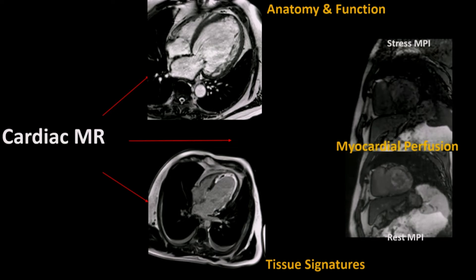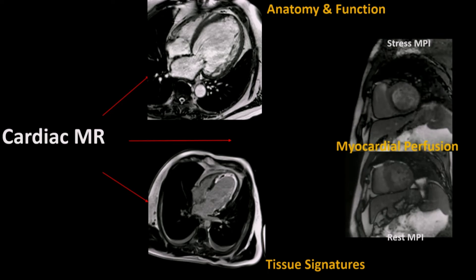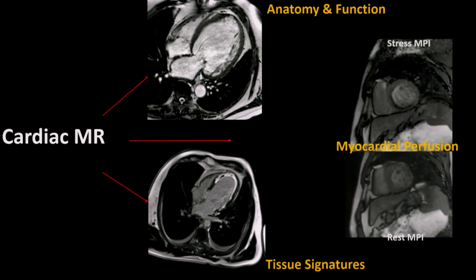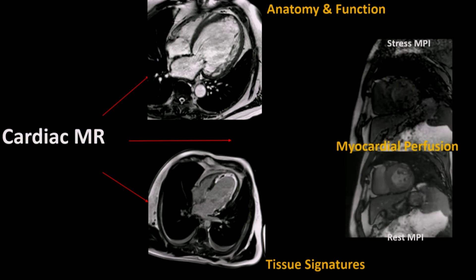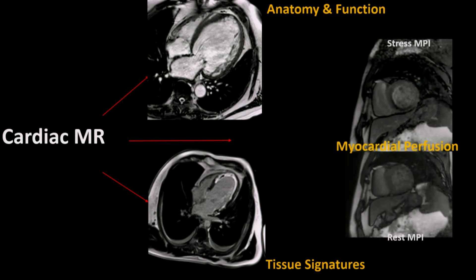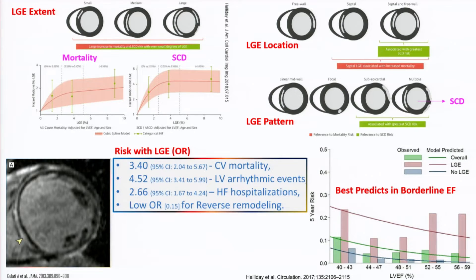Some of the randomized trials — the CE mark studies — seem to suggest that CMR is better than nuclear, but it had its own problems. The accuracy of nuclear in that arm wasn't as good as what is known in other centers. LGE scar attributes tell you more than just identifying a scar. The LGE, both the location and the extent, correlates with both mortality and sudden cardiac death. More importantly, it seems to predict prognosis even in people with mildly reduced EF, which is an area where we have difficulty in prognostication.